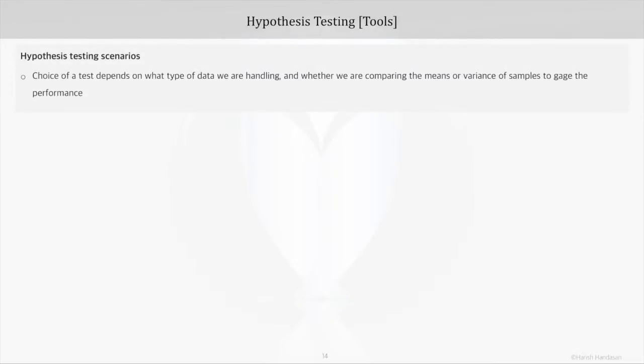The choice would primarily depend on the type of data we are handling and whether we are comparing means or specifically we just want to compare variance. So let's look at the various tools or options that we have in hypothesis testing. First, decide on what data types we are handling. Is the data discrete? If it's discrete, we use chi-square test. If it's continuous, we need to understand if we want to benchmark mean or variance.